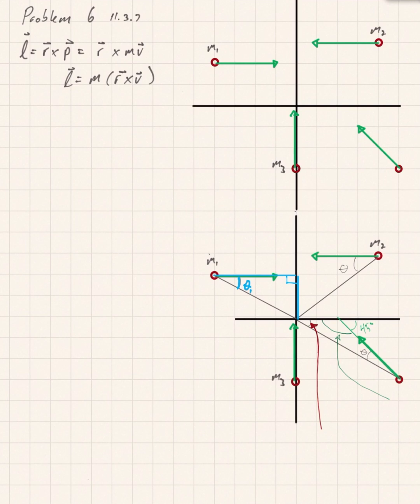Okay, here we have Problem 6. On this problem we need to find the angular momentum of these four particles that we have here in the diagram. We're just giving some masses m1, m2, m3, and m4, m4 being the one in the lower right-hand corner.